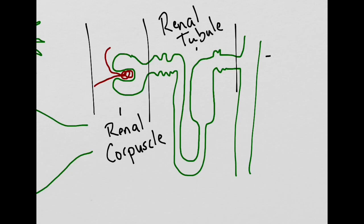And lastly, we have the collecting duct, which collects all the tubular fluid to be passed through as urine. Blood enters the kidney through the renal artery, and that artery will eventually become smaller and smaller until it becomes the afferent arteriole.